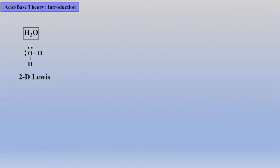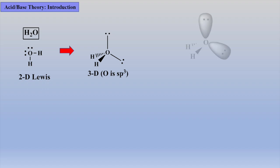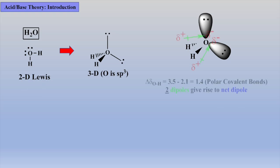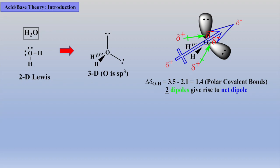To understand acid base theory, one has to understand water, so let's begin by reviewing some basic concepts regarding aqueous solutions. To better our understanding of water, let's fold the two-dimensional Lewis diagram of water into three dimensions by deducing that the central oxygen atom is sp3 hybridized. Once the 3D diagram is completed, we can place the individual dipoles that arise due to the differences of electronegativity values and then add them to afford the net dipole as shown.